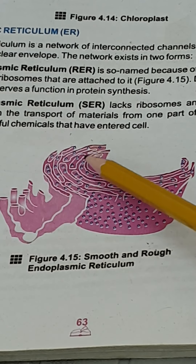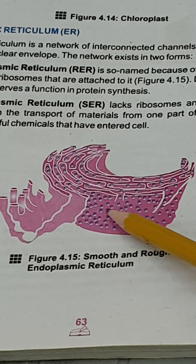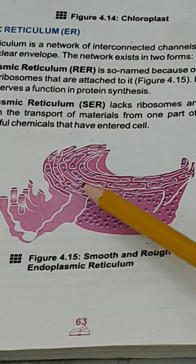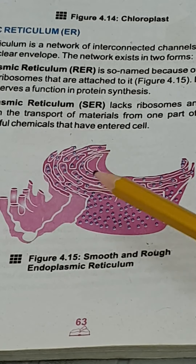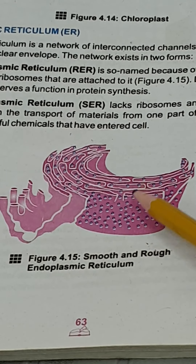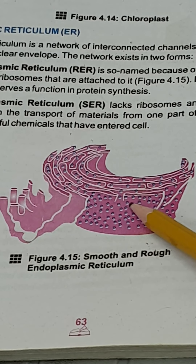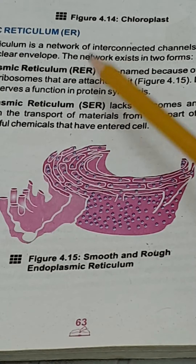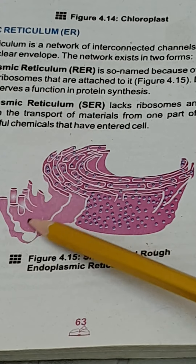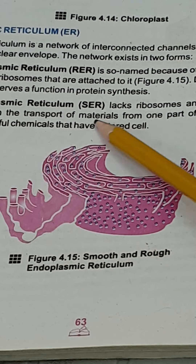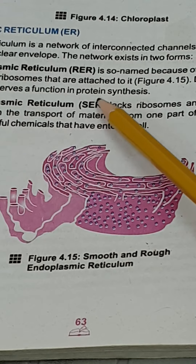There are two forms of endoplasmic reticulum. One part has granular structures — small granules called ribosomes — attached to its structure, and that form is known as rough endoplasmic reticulum. The other form has no granular bodies, has a smooth appearance, and is known as smooth endoplasmic reticulum.